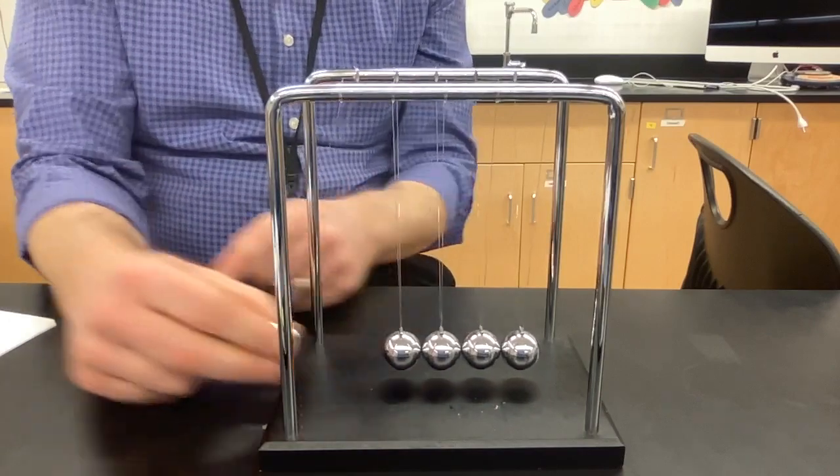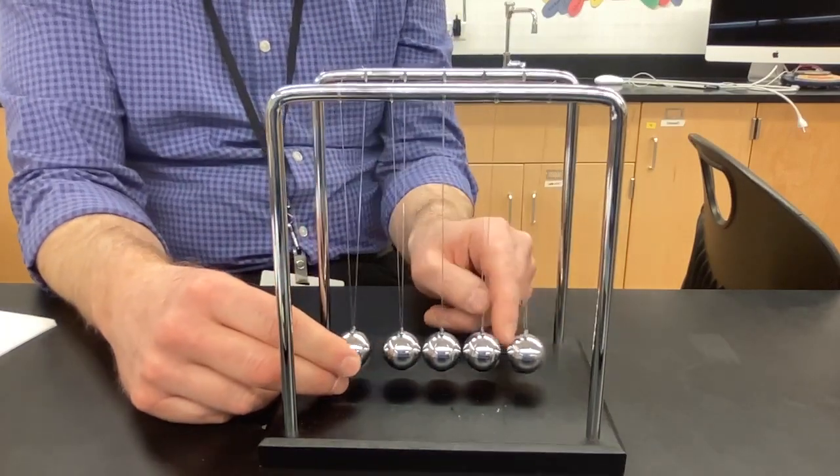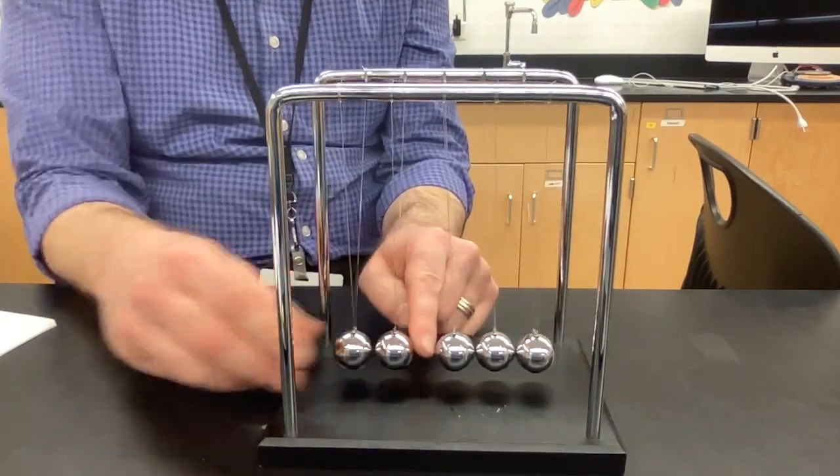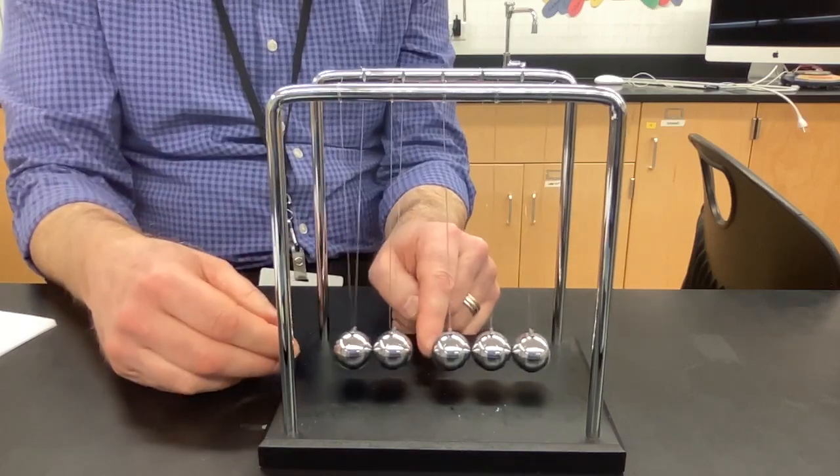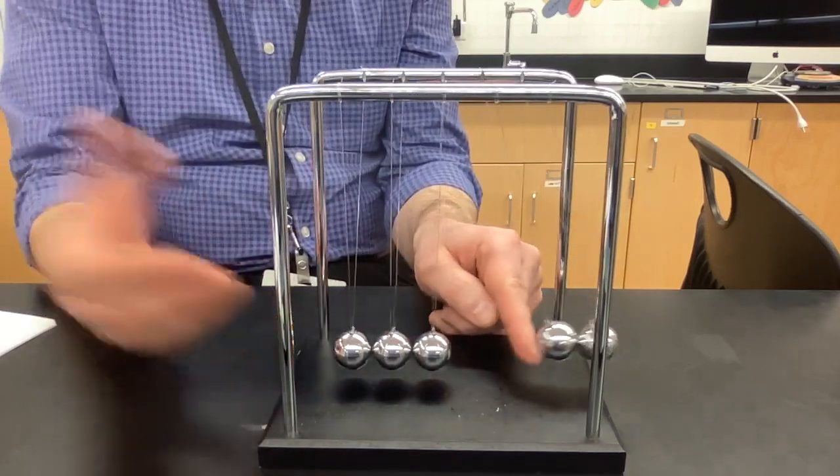So if I have M times V, I'm going to get M times V. If I get bigger M times V, I'm going to get bigger M times V and so on.